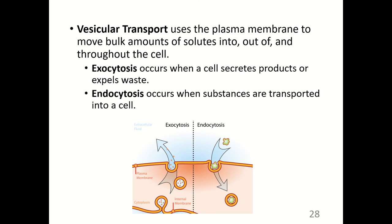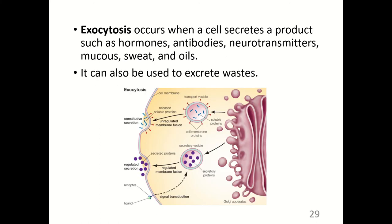Vesicular transport uses the plasma membrane to move bulk amounts of solutes into, out of, and throughout the cell. Exocytosis occurs when a cell secretes products or expels waste — 'exo' means to exit. Endocytosis occurs when substances are transported into a cell — 'endo' means to enter. Exocytosis is used to secrete hormones, antibodies, neurotransmitters, mucus, sweat, and oils, and can also excrete wastes.